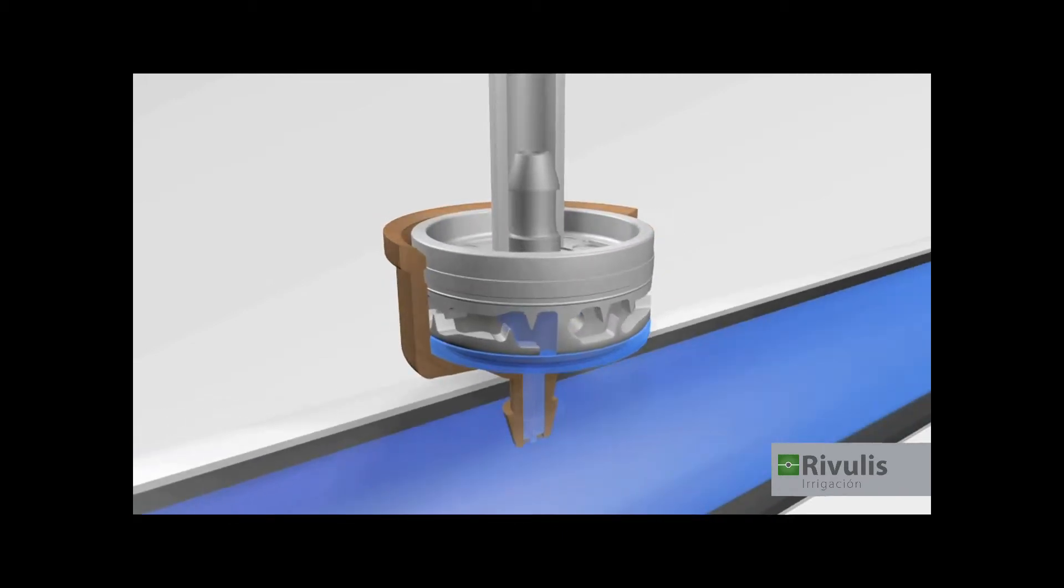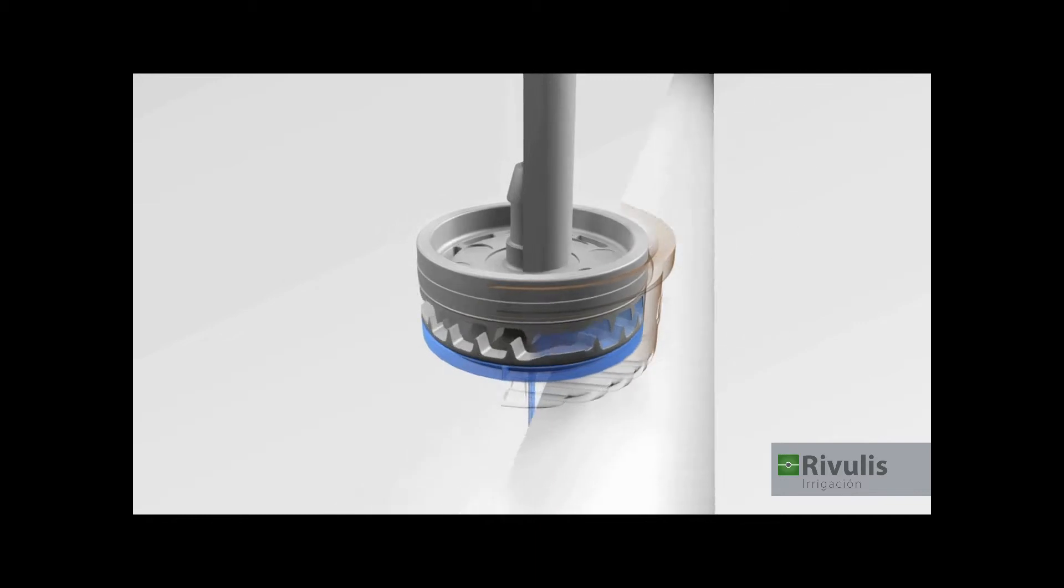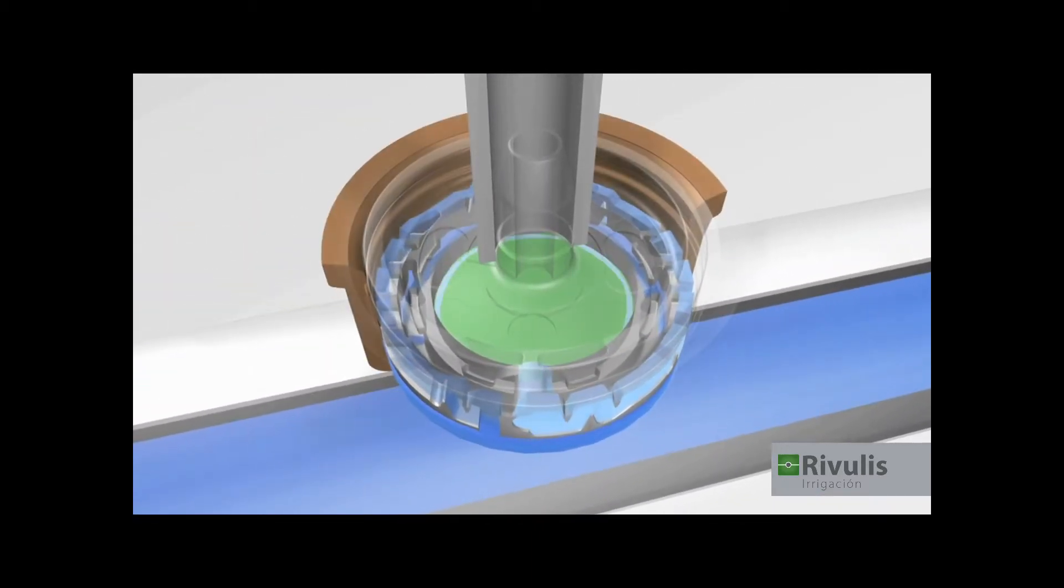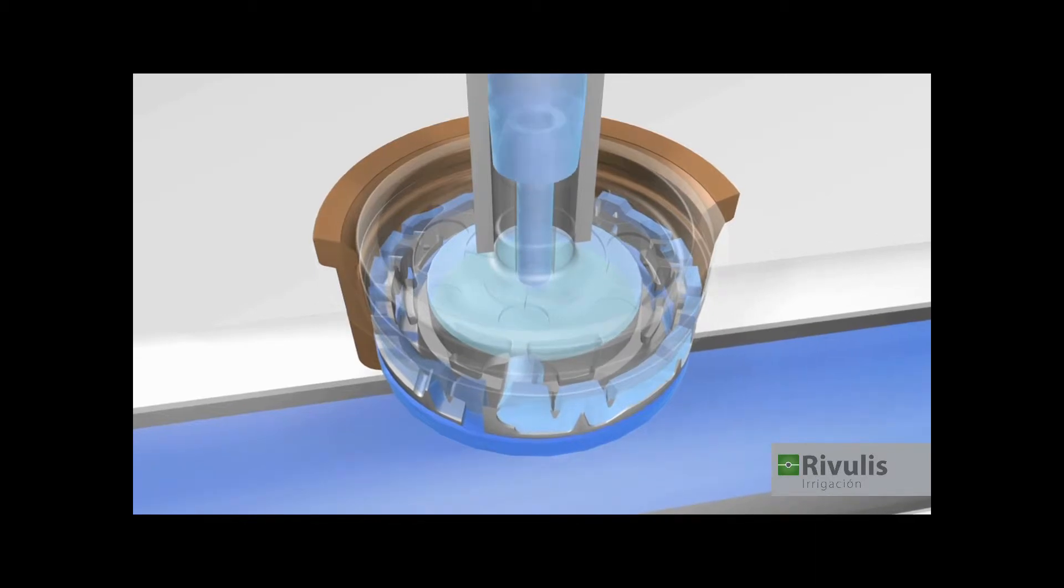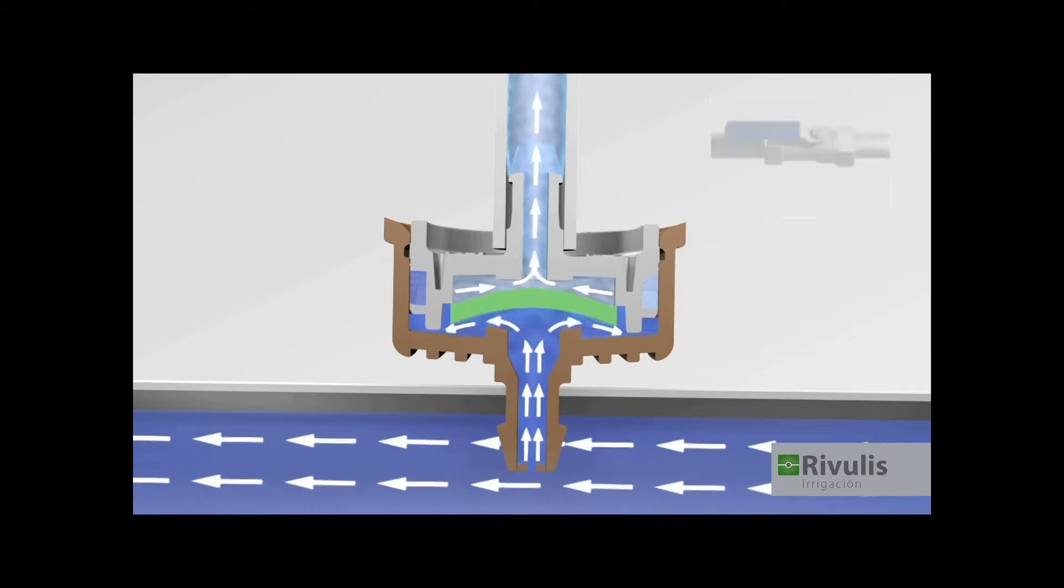The water then moves through the labyrinth, which reduces the water energy. On the other side of the membrane, the water fills a chamber, creating the differential regulation. Now that the membrane is in regulation position, the dripper delivers the required flow rate.